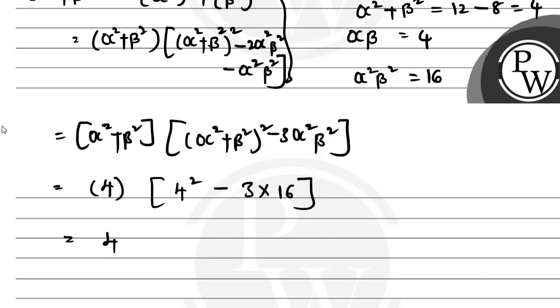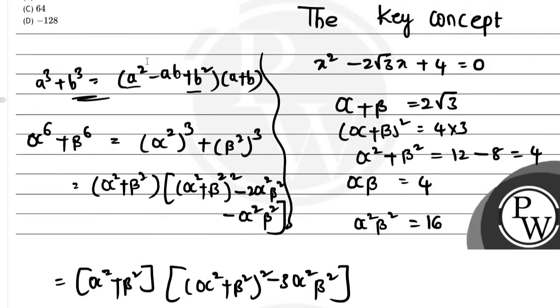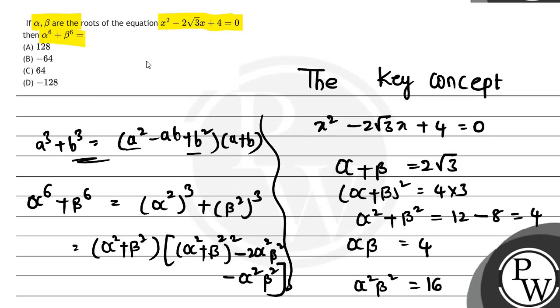This becomes 4 × (-32) = -128, which is the correct answer for this question. According to the options, option D is correct.